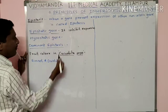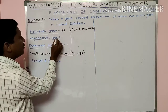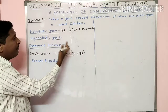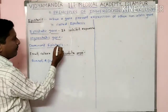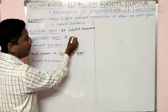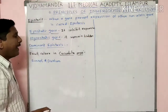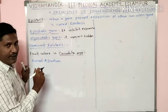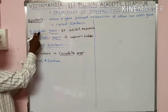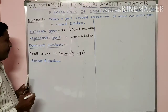The gene whose expression remains hidden or gets suppressed due to the epistatic gene is called the hypostatic gene. The hypostatic gene remains hidden and does not express its trait in the presence of the epistatic gene.